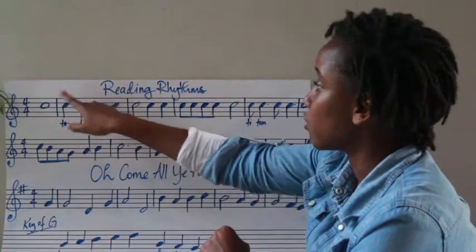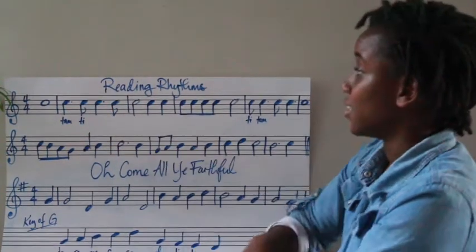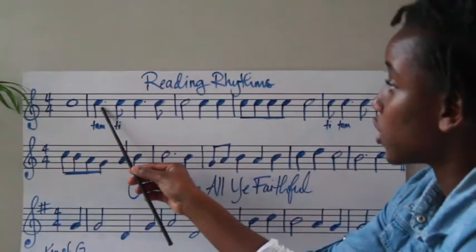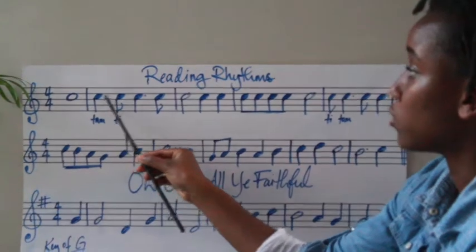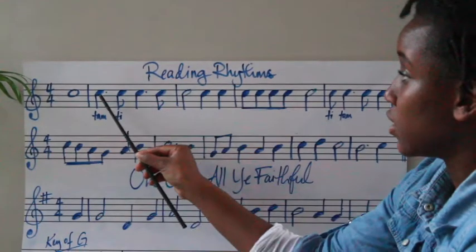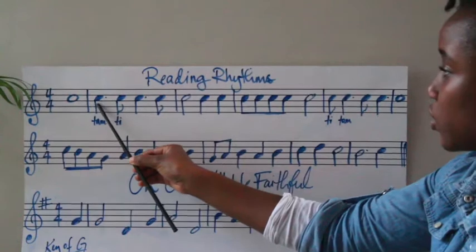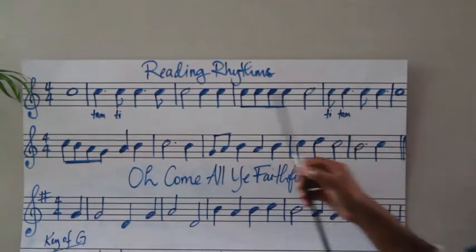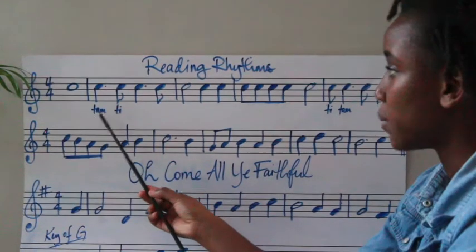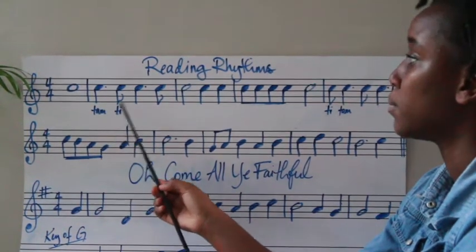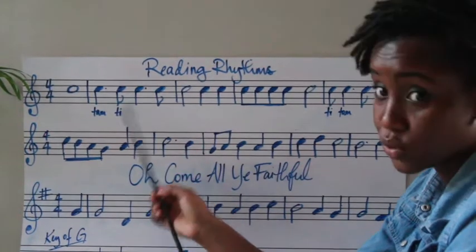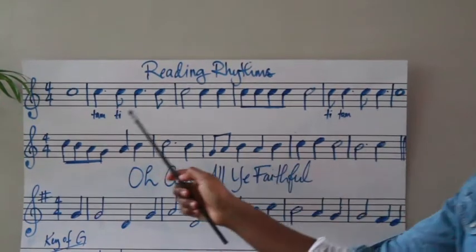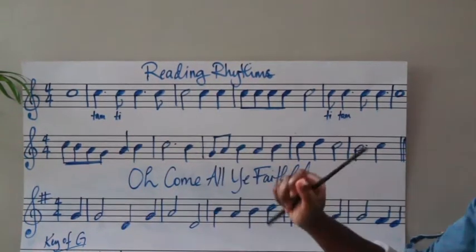And then we have this sequence — a dotted quarter note followed by an eighth note. They come in different combinations: the dotted quarter note first, or the eighth note first. We make it easier by reading it as Tam-Ti. The Ti is really short. So it would be Ti-Tam, Ti-Tam, Tam, Ti-Tam, Ti.